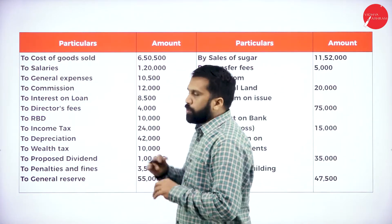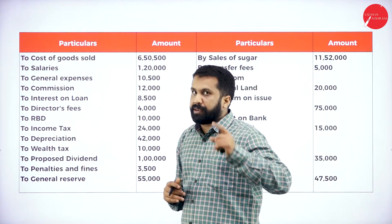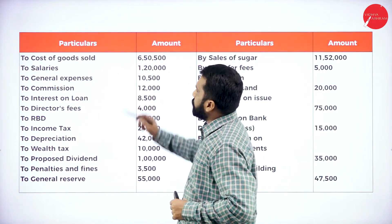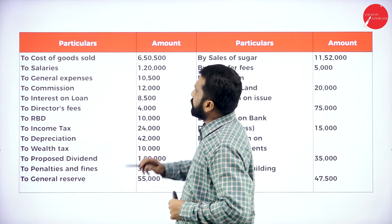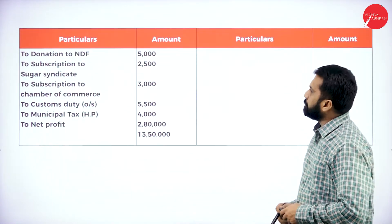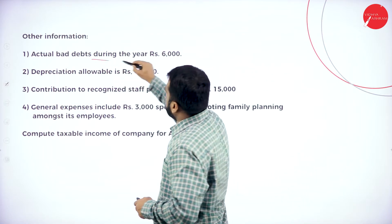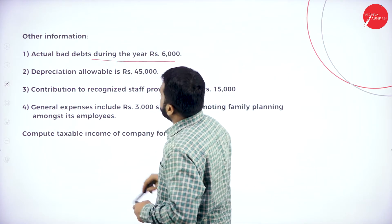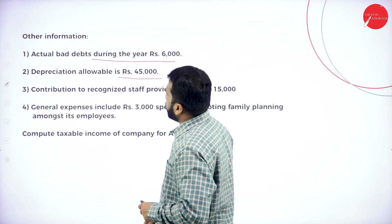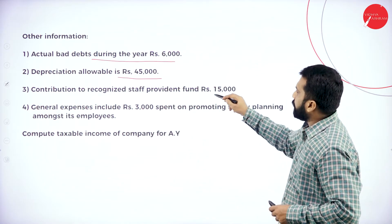Cost of goods sold — no. Whatever list I have given, remember that. Cost of goods sold — no. Salary — no. We will go to adjustment. In the adjustment, we have adjustment on bad debts, depreciation as per income tax, contribution to recognized provident fund.